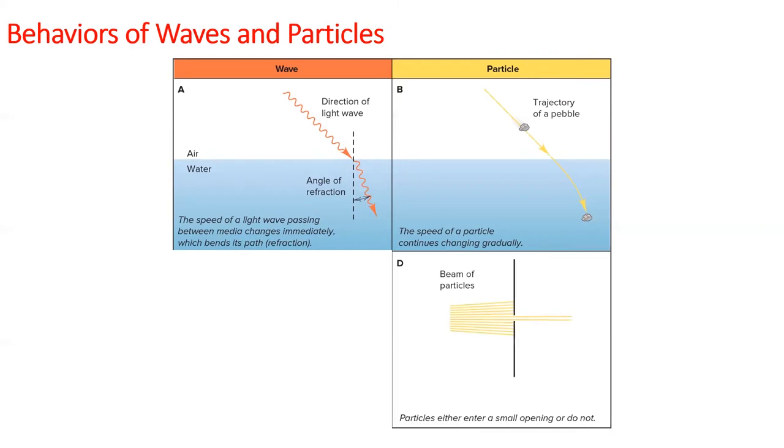Sticking with particles, if a beam of particles encounters a barrier with a hole in it, they can either make it through the hole, in which they continue on their path unaltered, otherwise they are blocked by the barrier.